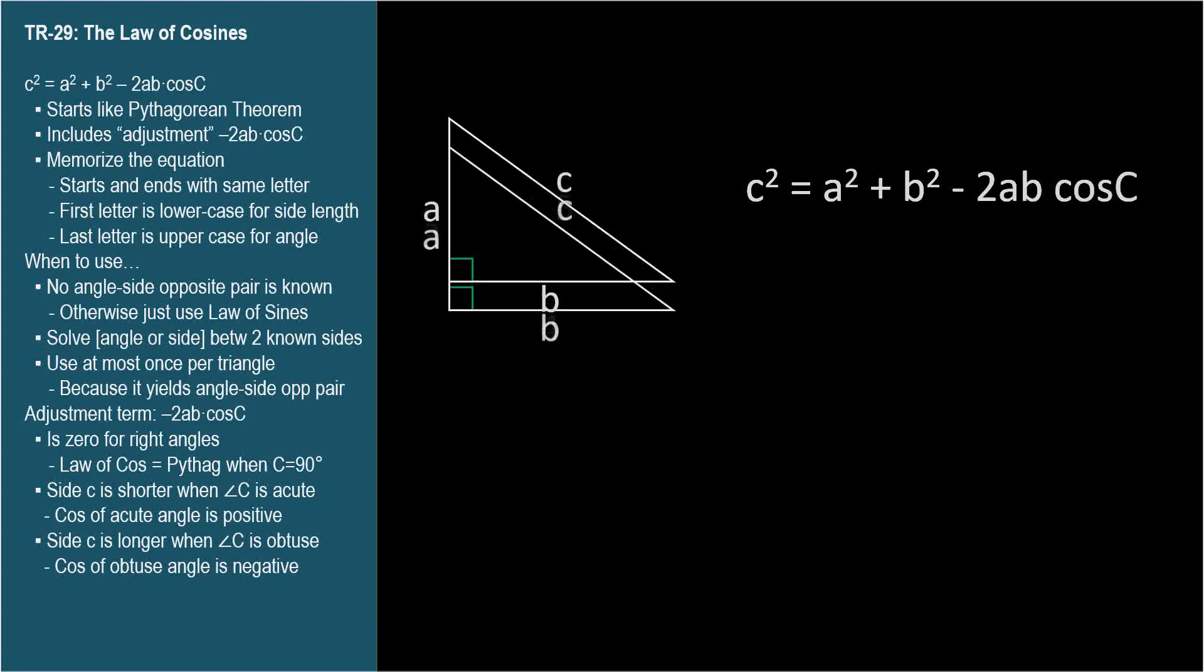Let's use a 3-4-5 right triangle. We start with 5 squared equals 3 squared plus 4 squared. The Pythagorean Theorem. The Law of Cosines adds one more term.